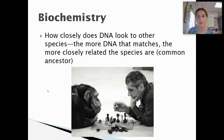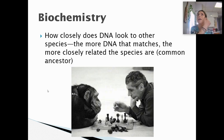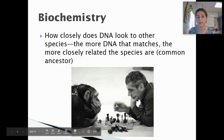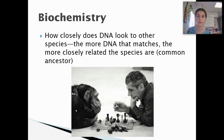Last, we have biochemistry: how closely does DNA look compared to other species? The more DNA that matches, the more closely related the species are, and they share a common ancestor. As we saw in a previous lecture, the dog has 81% of the same DNA as humans, which makes sense because dogs and humans are both mammals and have a common ancestor. We also have a lot of similar DNA to chimpanzees and monkeys, meaning we share common ancestors with them as well.